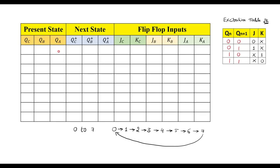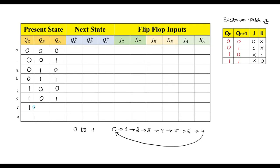In the present state column it will count from 0 to 7. Let me write all possible values from 0 to 7 — that is 0, 1, 2, 3, 4, 5, 6, and 7 — in binary.